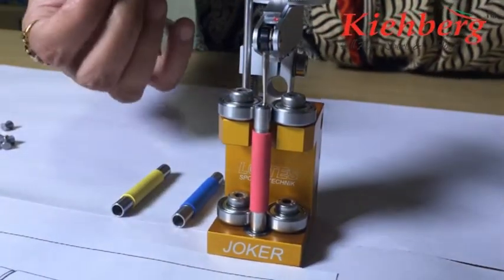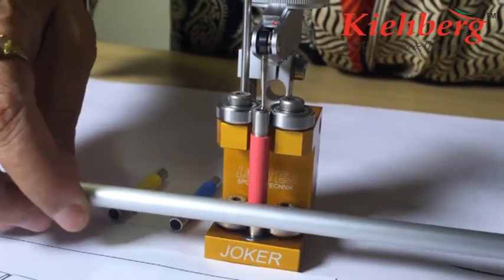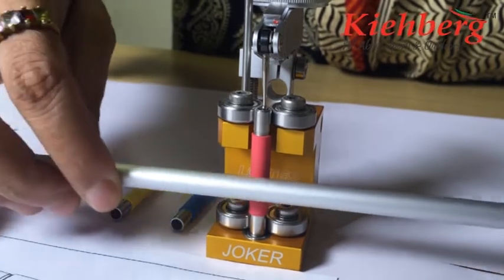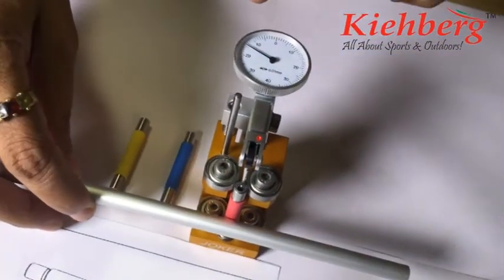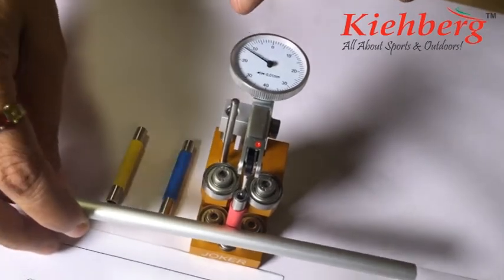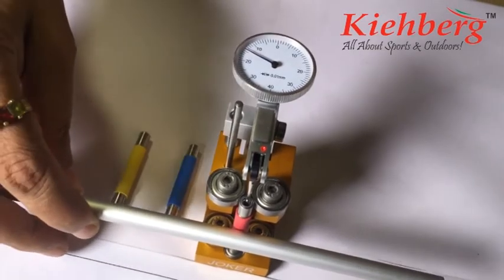Now using this rod, I'm going to rotate these ball bearings. You can see there is no flickering of the pointer in the dial gauge, which shows this air pellet is very, very accurate.